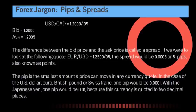Most currencies trade within a range of 100 to 150 pips per trading day. To recap: base currencies are on the left, your quoted or counter currency is always on the right. The bid price is the buying price, while the ask price is the selling price, and the difference between those two prices is known as your spread, which is determined by the number of pips between the bid and ask prices.